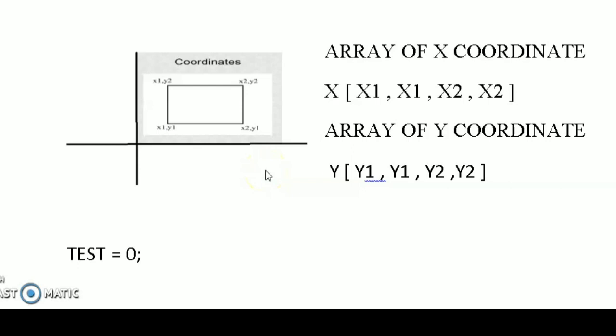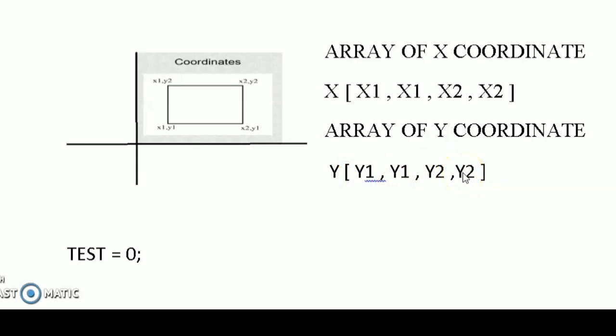Now let us see how the bitwise XOR function is used to solve our problem. Consider a rectangle having the coordinates (x1,y1), (x2,y1), (x1,y2), and (x2,y2), which is parallel to the coordinate axes. First we make an array of x-coordinates with elements x1, x1, x2, x2, and similarly we make an array of y-coordinates with elements y1, y1, y2, y2.